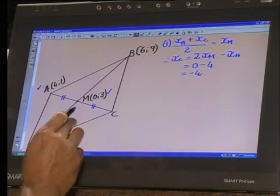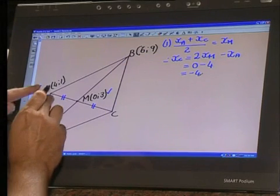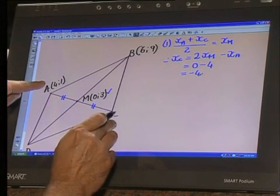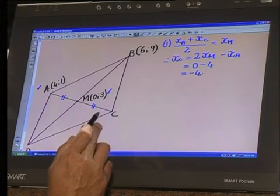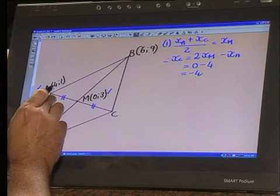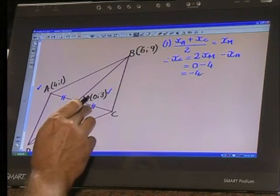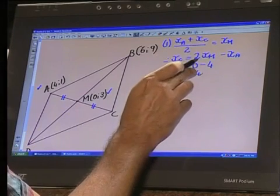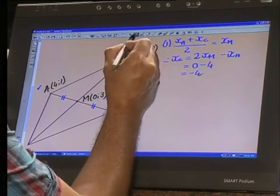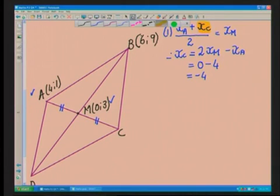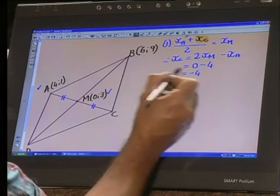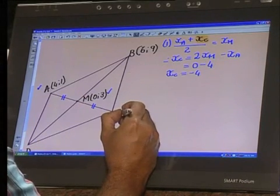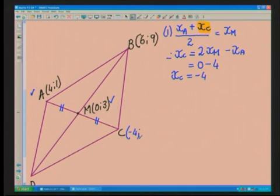We took our midpoint formula which says if we want to find the midpoint, we need to take this x value, add it to this x value and half the answer. The x coordinate for A is 4, the x coordinate for M was 0. We noticed that we wanted to solve for the x coordinate of C. We multiplied up the 2xM and we kicked the xA over. So twice 0 minus 4 gave me the x coordinate for C. Now I know that this is the x value of negative 4.